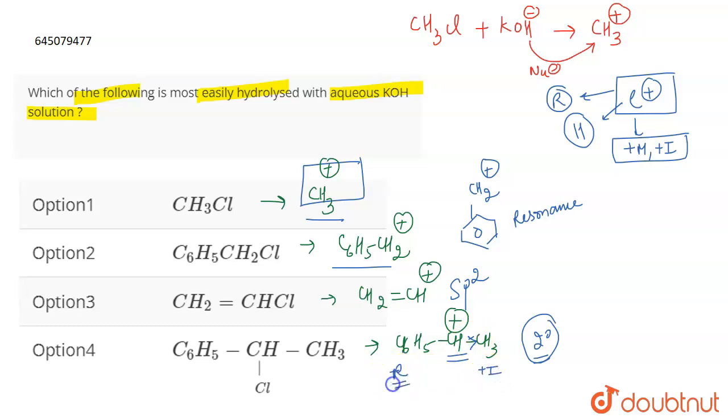And here what we have, this carbocation is stabilized by inductive effect, plus I effect, resonance effect, and also hyperconjugation. So there are three factors that are affecting the stability of the carbocation. So the carbocation which is formed in case four is the most stable, and therefore is most prone to the nucleophilic attack, and therefore it is easily hydrolyzed. So the correct answer for this question is going to be option four.